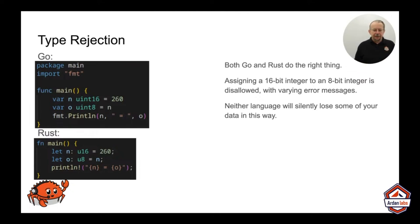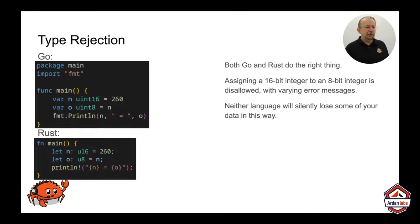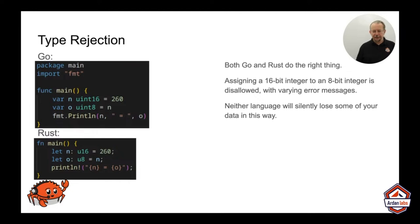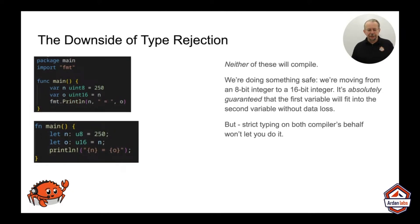In Go: 16-bit number 260, 8-bit number 0, print the two out — it's disallowed, won't compile, you get an error message. Rust does the same thing. Both tell you that you have a type problem. The Rust message is a whole lot more long-winded, but they both boil down to the same thing.